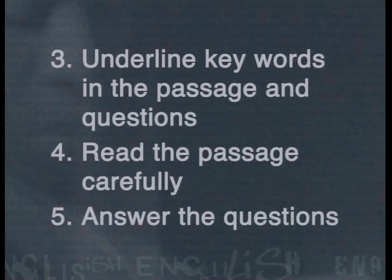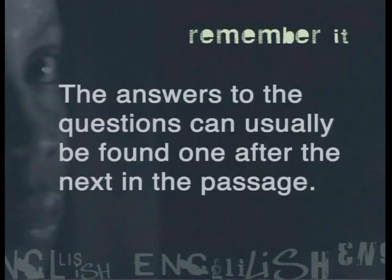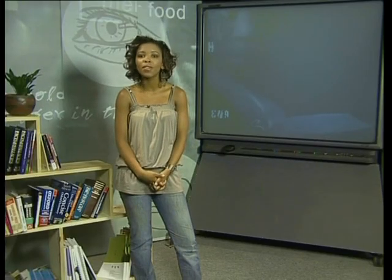Now that you have familiarised yourself with both the passage and the questions, it is time for step five: actually answering the questions. Here's a helpful hint — the answers to the questions can usually be found one after the next in the passage. So the answer to question three is likely to be found between where you find the answers to question two and four. If you keep this in mind, it will help you to work out which paragraph you are likely to find which answer in.